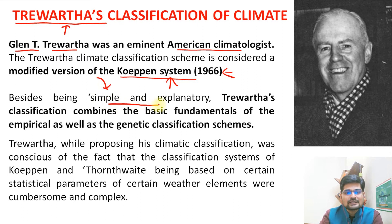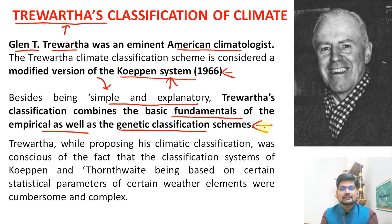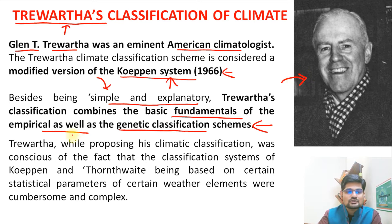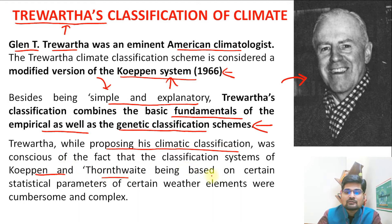Besides being simple and explanatory, Trewartha's classification combines the basic fundamentals of empirical as well as genetic classification schemes. In Köppen's classification, this was missing — there was no genetic basis and no empirical basis for a particular area. Trewartha was very conscious that the classification systems of Köppen and Thornthwaite, being based on statistical parameters of certain weather elements, were cumbersome and complex.